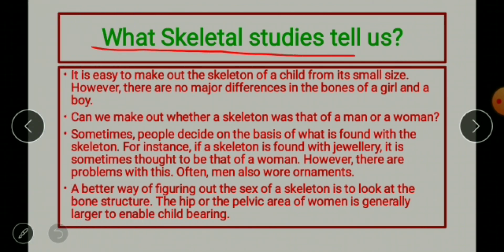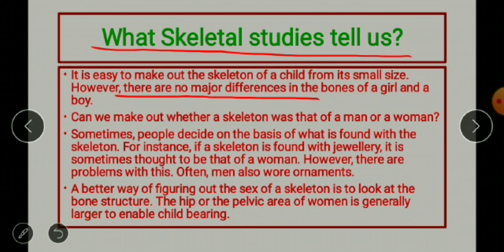The next topic is what skeletal studies tell us. It is easy to identify the skeleton of a child from its small size. However, there are no major differences in the bones of a girl and a boy, so archaeologists cannot differentiate the sex of a child's skeleton. Can we determine whether an adult skeleton was that of a man or a woman?